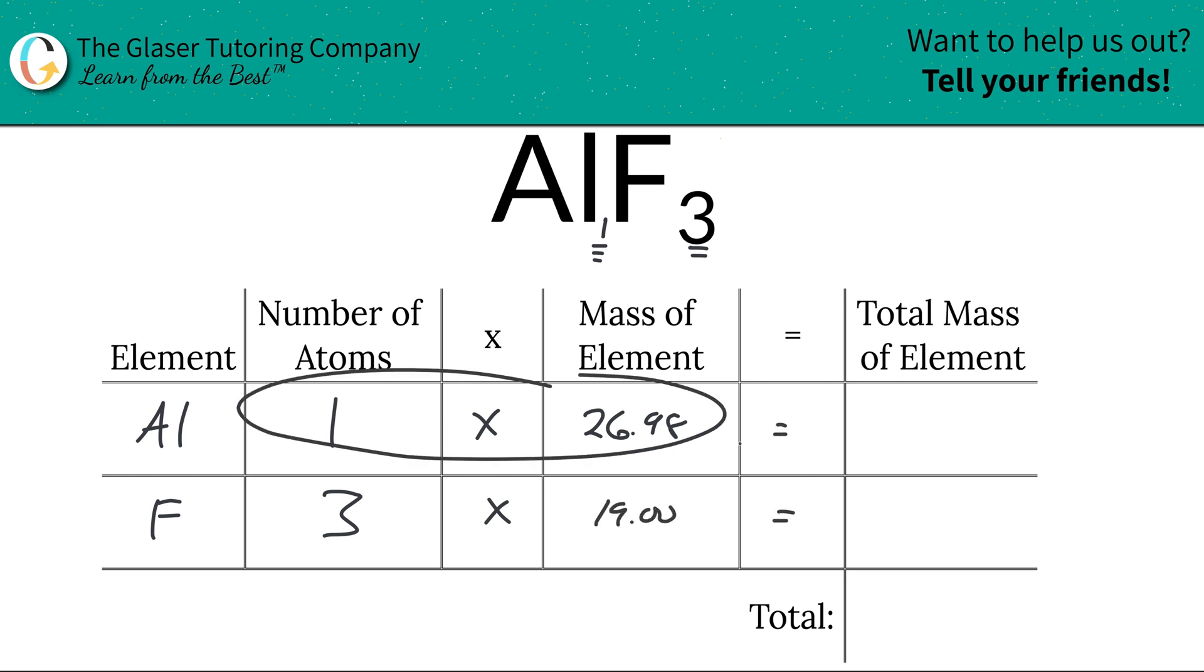Then all we have to do is just simply multiply this row together to get the total mass of the element in the compound. So the total mass of aluminum is going to be 26.98, and the total mass of fluorine here will be 57, 19 times 3.